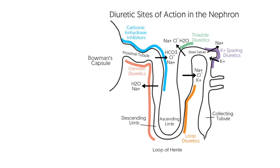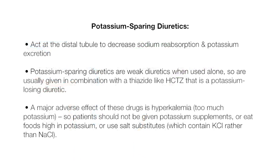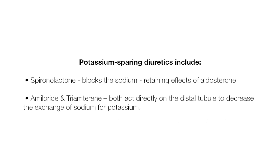Potassium-sparing diuretics act on the distal tubule to decrease sodium reabsorption and potassium excretion. They are weak diuretics when used alone, so are usually given in combination with a thiazide like HCTZ, which is a potassium-losing diuretic. A major adverse effect is hyperkalemia, or too much potassium, so patients should not take potassium supplements, eat foods high in potassium, or use salt substitutes, which contain potassium chloride rather than sodium chloride. Drugs in this class include spironolactone, which blocks the sodium-retaining effects of aldosterone, and amiloride and triamterene, which act directly on the distal tubule to decrease the exchange of sodium for potassium.